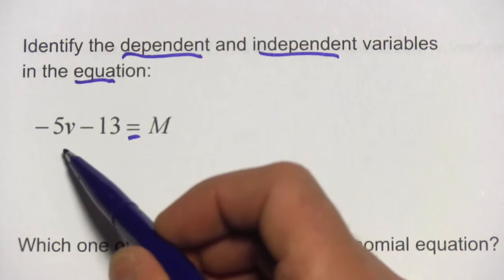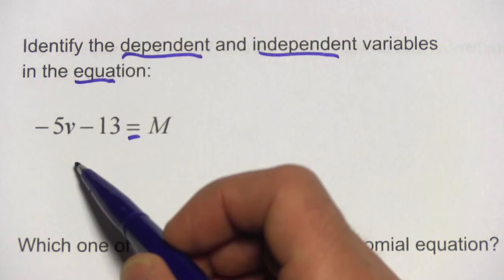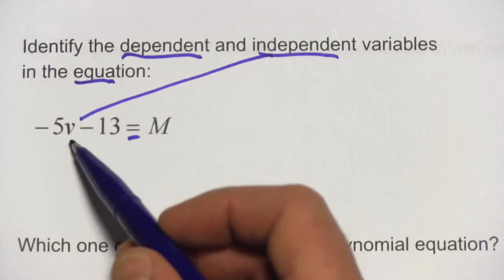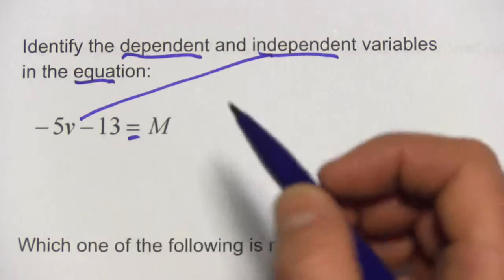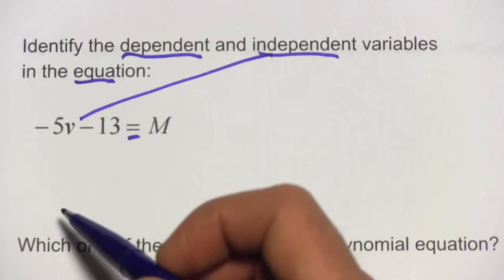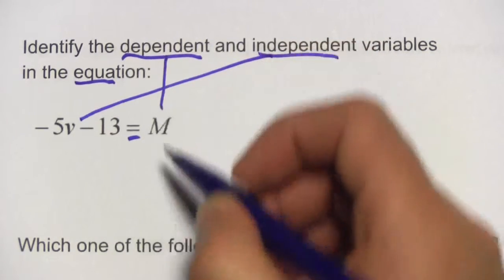The variable where you're plugging things in to crunch the numbers is the independent variable because it can be a lot of different things. We can just choose to put stuff in there. The dependent variable is the one that depends on all that calculation going on, and that, in this case, is m.